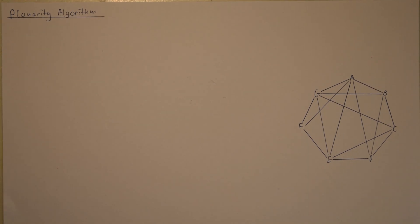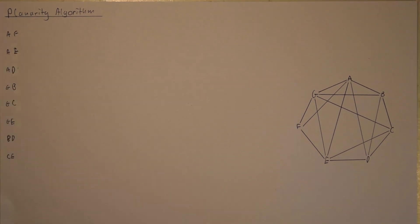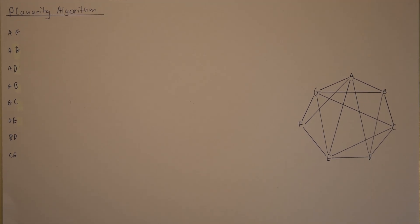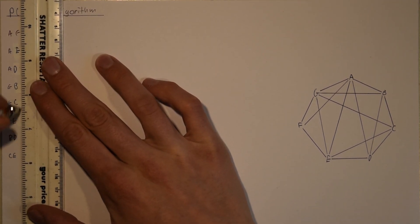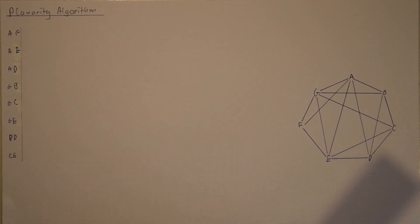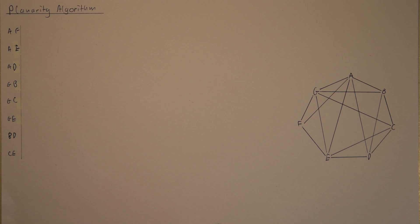Once you have your graph drawn like this, you first need to make a list of all the edges that are inside the graph — not outside, but inside. Once you've done that, draw a vertical line across them. To start off, we pick the first edge here which is AF, and we are going to label it I, meaning the edge is inside the polygon.